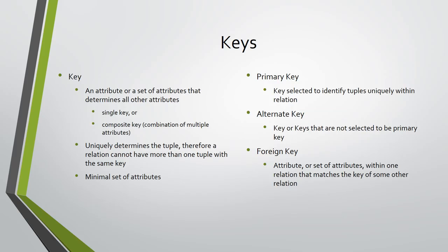However, when we talk about keys we mean minimal such sets of attributes. That means that any proper subset of them is not a key. A relation may have more than one key. One of them is selected as the primary means of identifying a tuple, and is called a primary key. All other keys, which are not selected as primary, are called alternate keys.